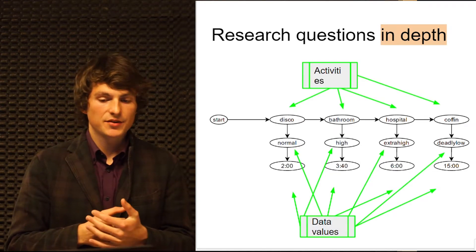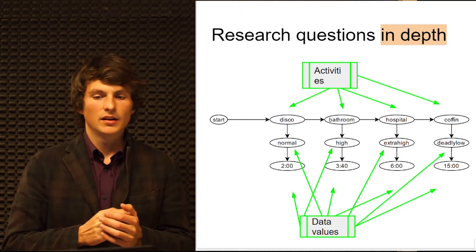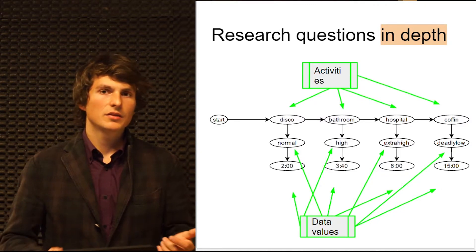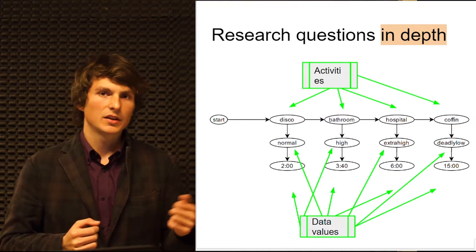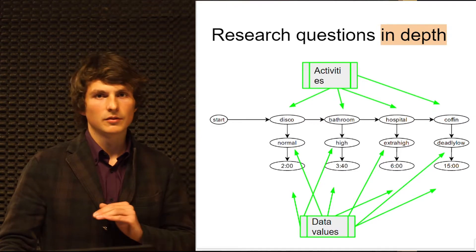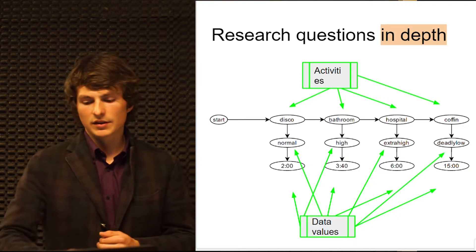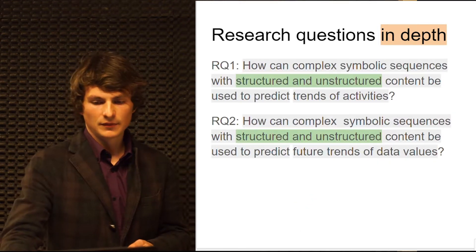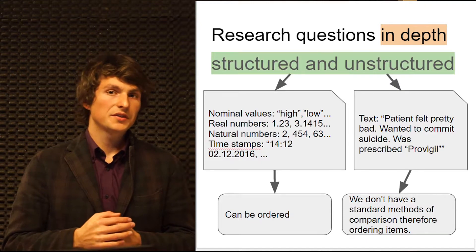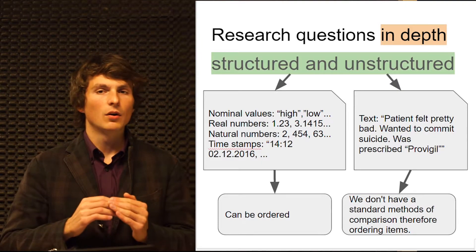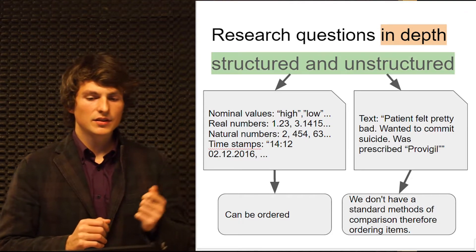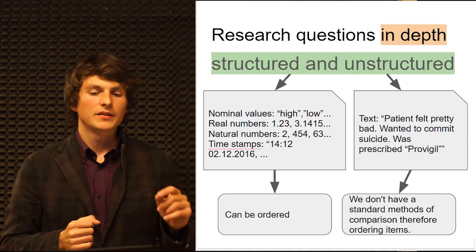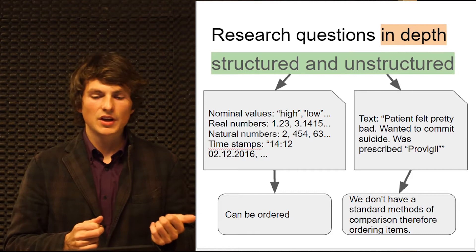And we have data associated with each event. In our case, it's temperature — can be normal, high, extra high, and whatever. And also, we have a timestamp. For example, at 2am he was in disco, and at 15pm you are already on the graveyard or in the coffin. Now, we will see what is the structured and unstructured content. Structured is the content that can be compared and ordered in some hierarchy. This includes nominal values such as high, low, normal, and real values, natural numbers, or timestamps.